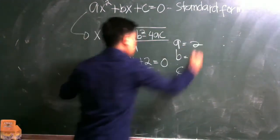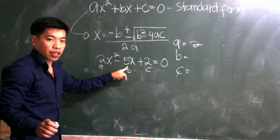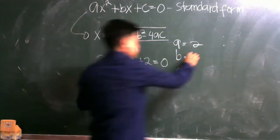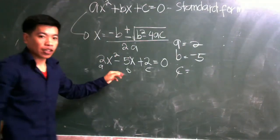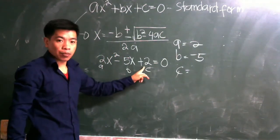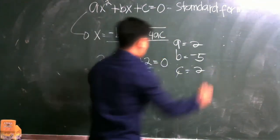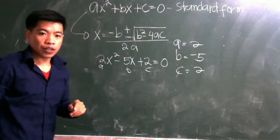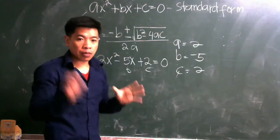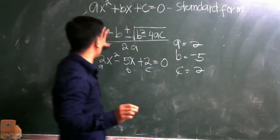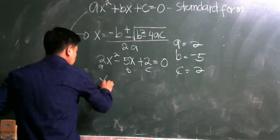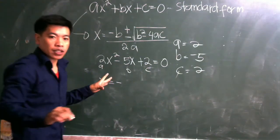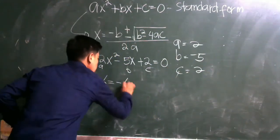Next, b is the coefficient of the x term, which is negative five. And c is the constant term, which is positive two. So a = 2, b = −5, and c = 2. Now let us substitute these values into our formula. x equals negative b, and our b is negative five, so negative of negative five.